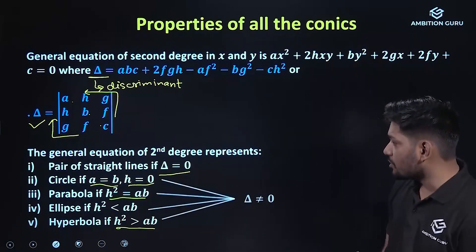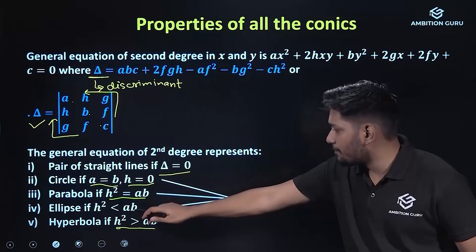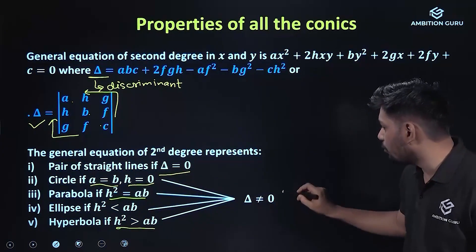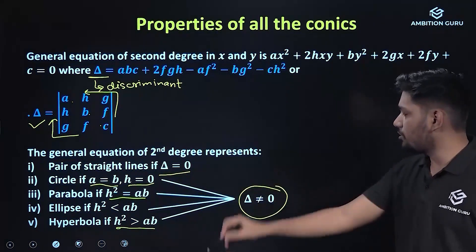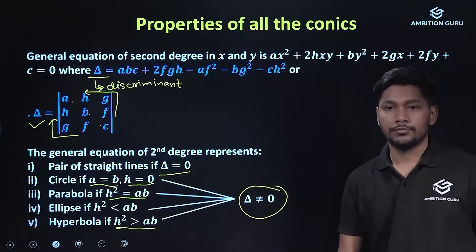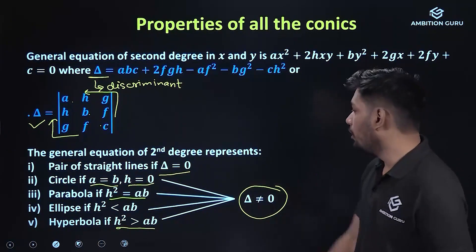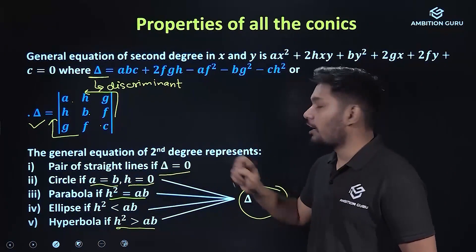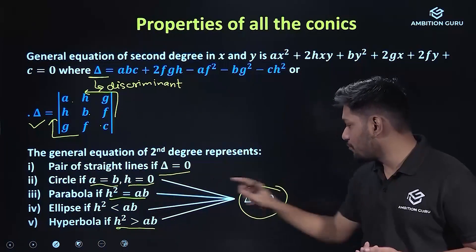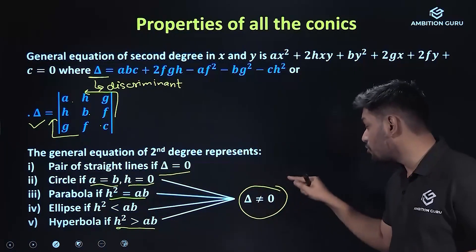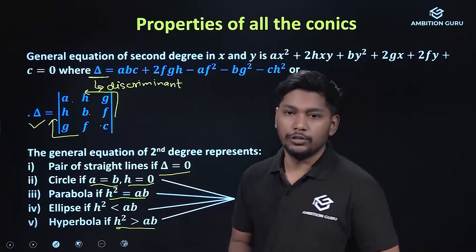So there are four conic types: circle, parabola, ellipse, and hyperbola. These occur when delta is not equal to 0. When delta equals 0, we get a pair of straight lines instead of a proper conic.